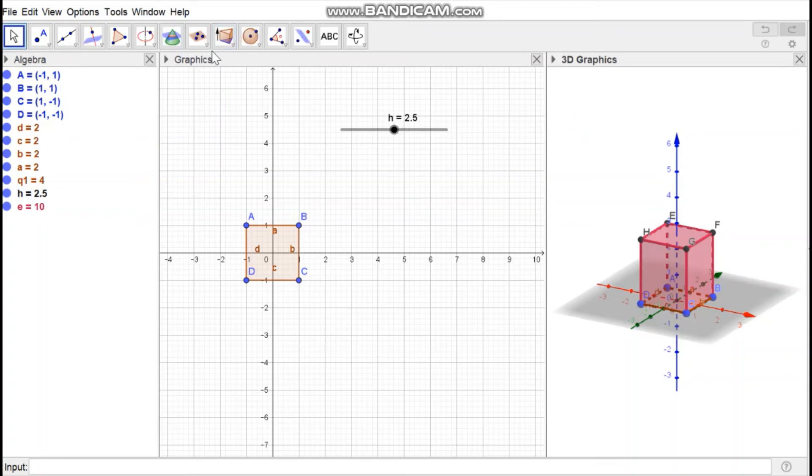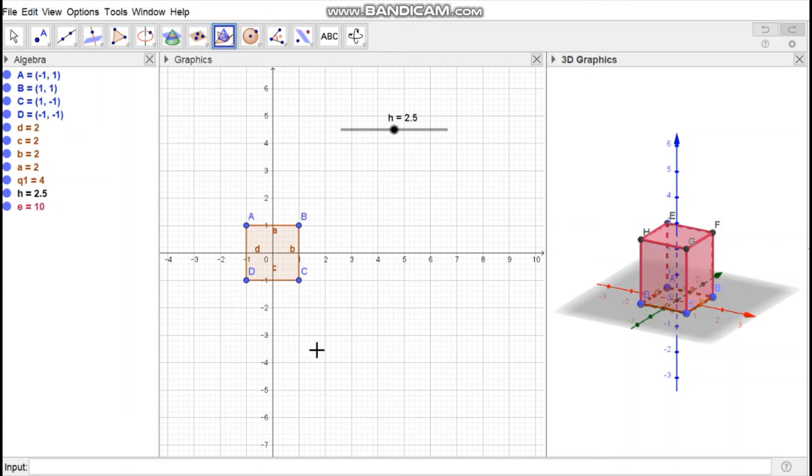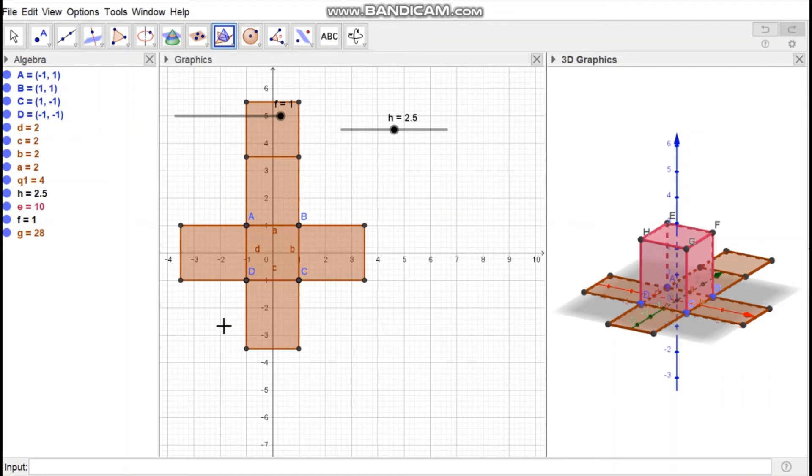Open the same dropdown menu and select the Net option, then select the cuboid. A net diagram is generated and a slider is created automatically.